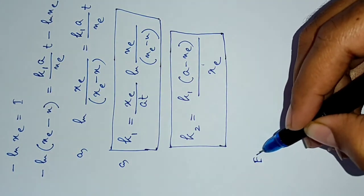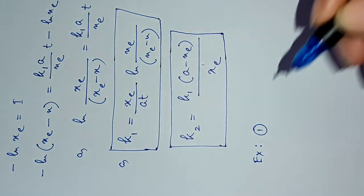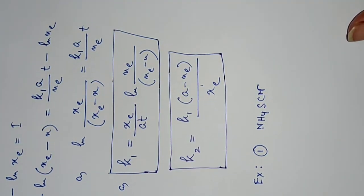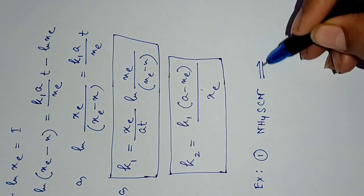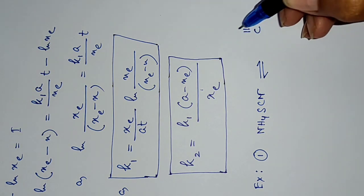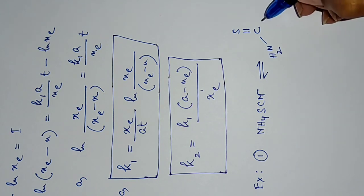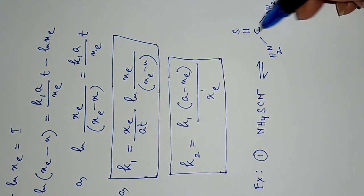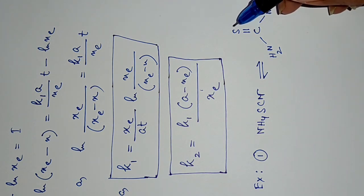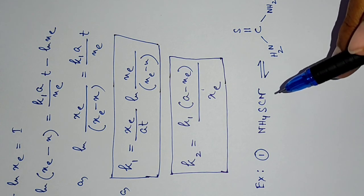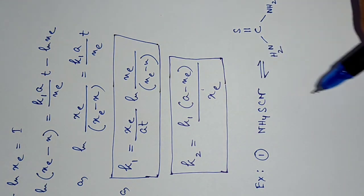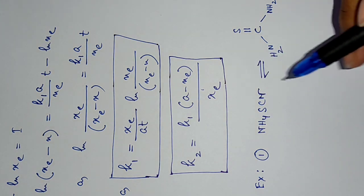An example of such an opposing reaction is the interconversion of ammonium thiocyanate and thiourea. Urea has a C=O group with two NH2 groups; replacing the oxygen with sulfur gives thiourea. The forward reaction from ammonium thiocyanate to thiourea and the reverse reaction from thiourea to ammonium thiocyanate is the simple opposing reaction considered in these two videos.